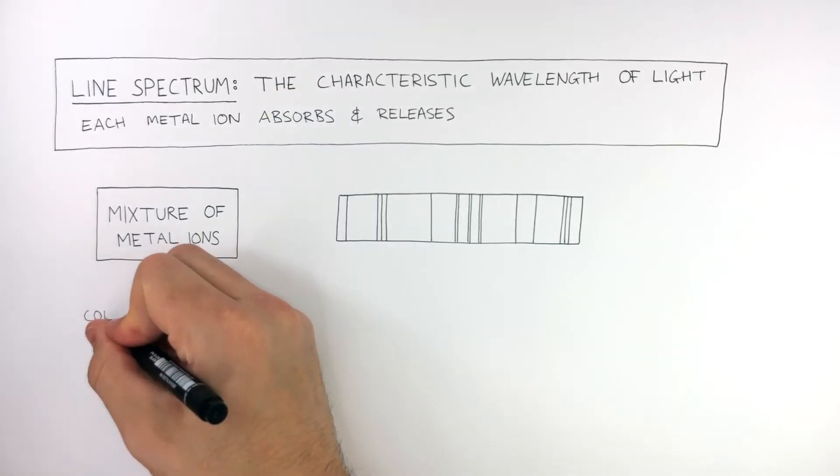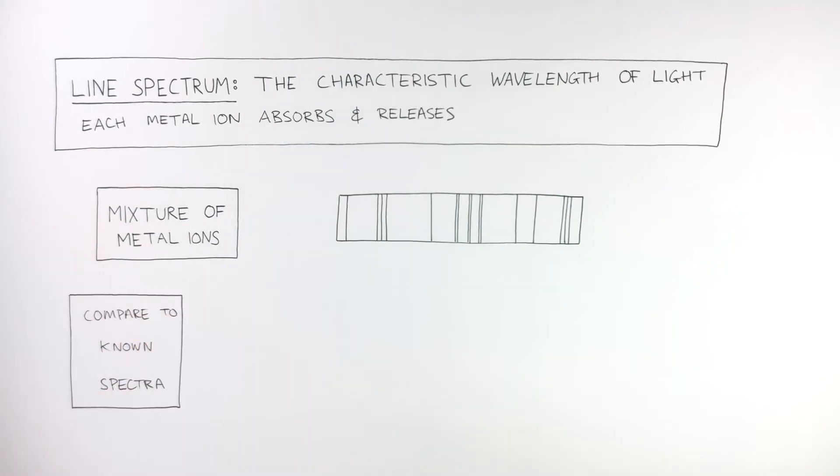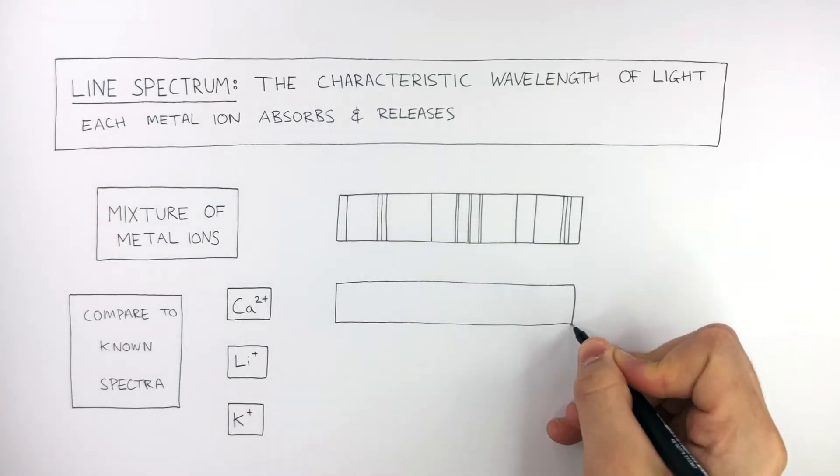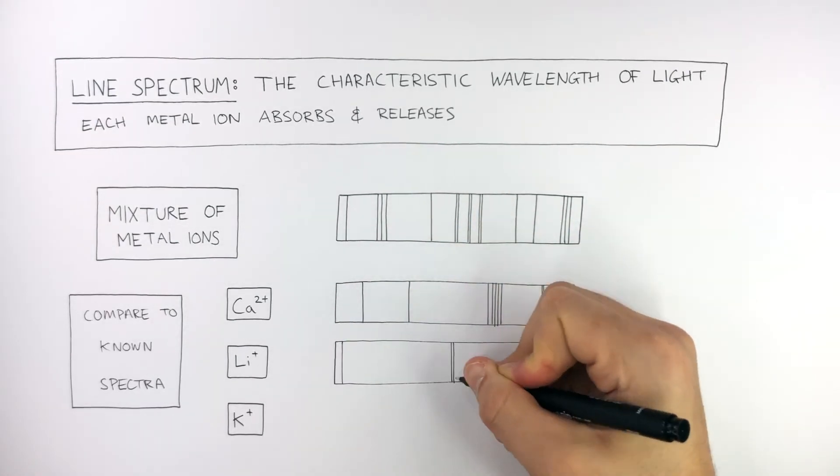This line spectrum is then compared to known spectra, for example, calcium ion, lithium ion, and potassium ion. The line spectrum containing the mixture of metal ions is compared against the line spectra of known metal ions from a database.